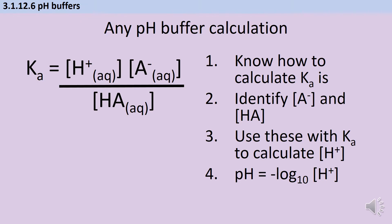Once we can write an expression for Ka, with our hydrogen ion and anion concentrations on the top and our acid concentration on the bottom, the next step is to work out what the anion concentration is and what the acid concentration is. Once you have those, you can use them together with Ka to calculate the hydrogen ion concentration. And then from there, we work out pH by taking the negative log base 10. Each of the three styles follows this same process.